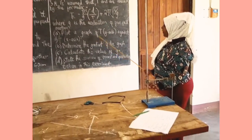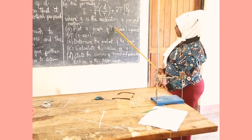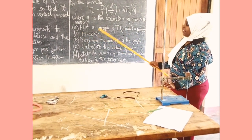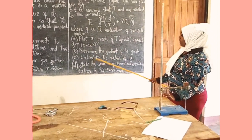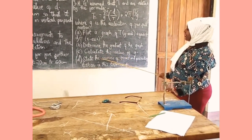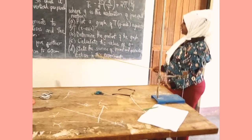Plot a graph of T on the y-axis against D over T on the x-axis. Determine the gradient of the graph, calculate the value of G, and state the sources of errors and precautions taken in this experiment.